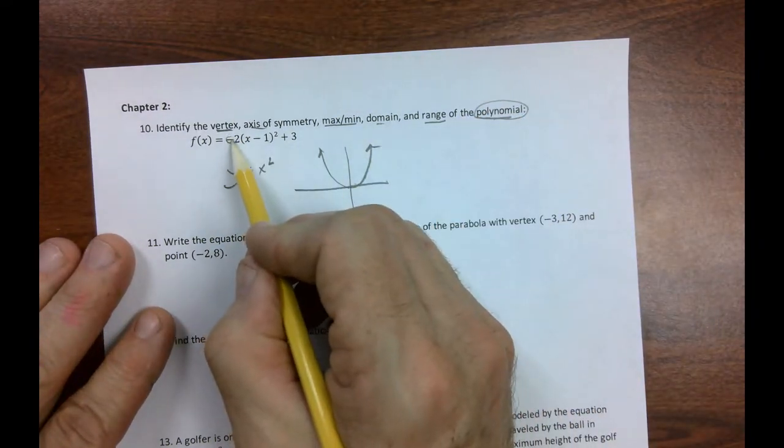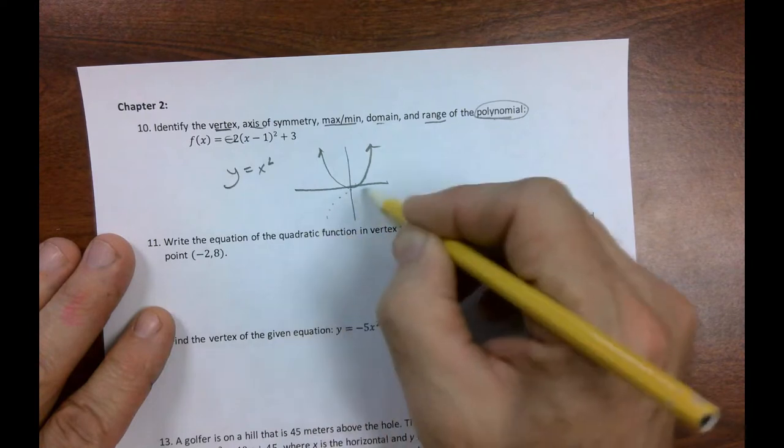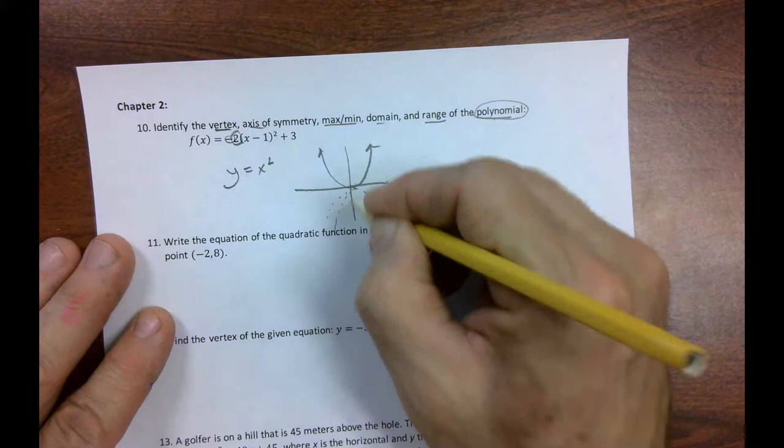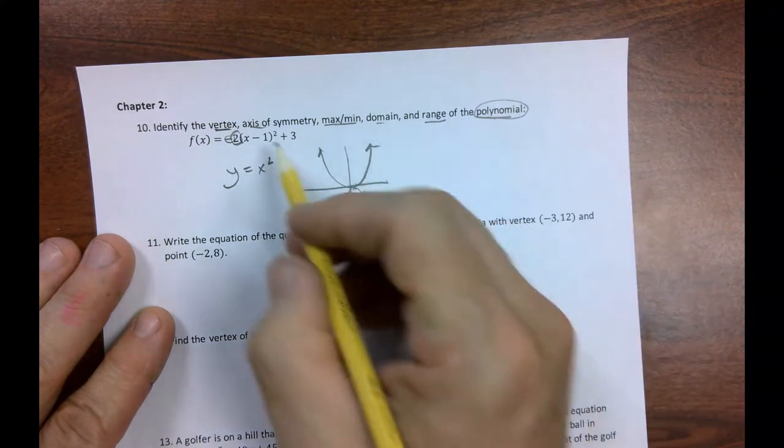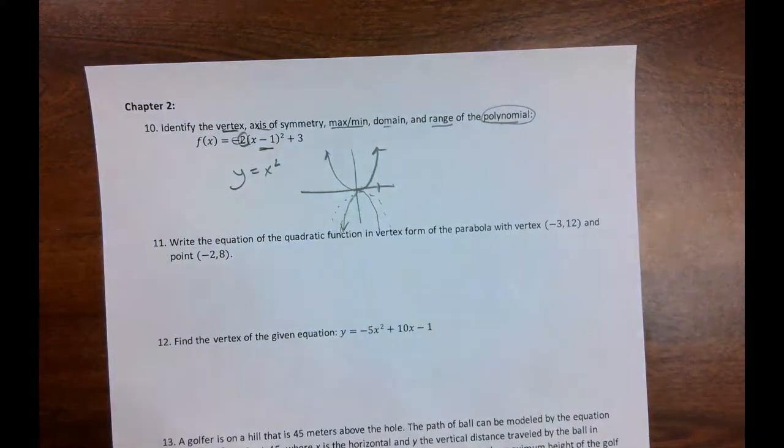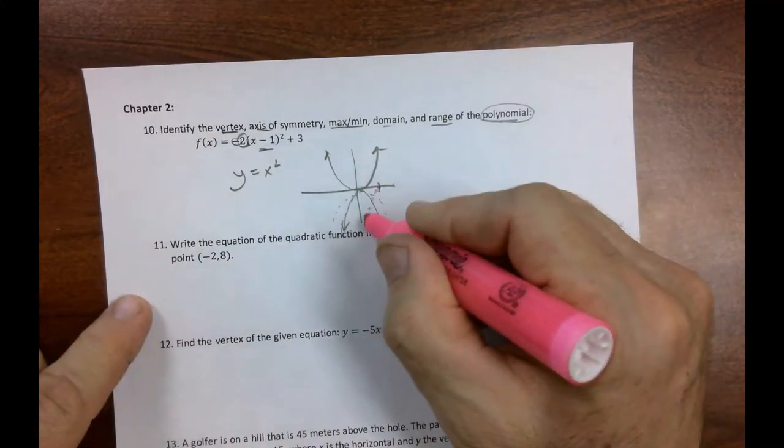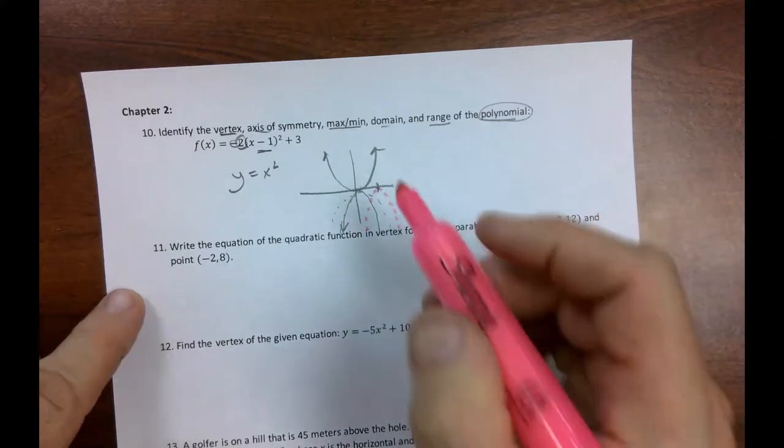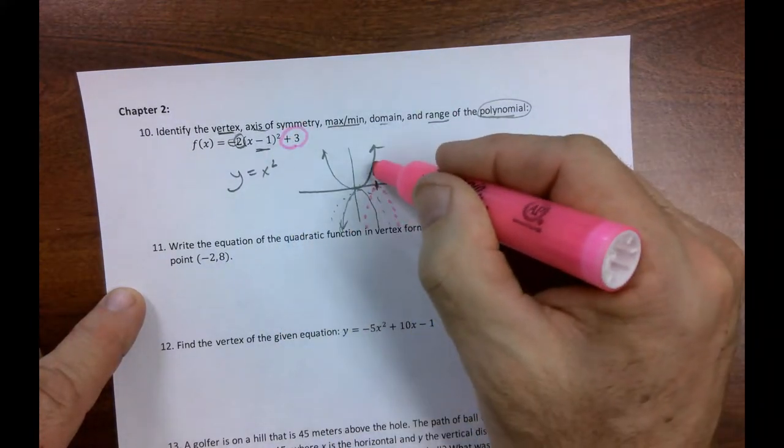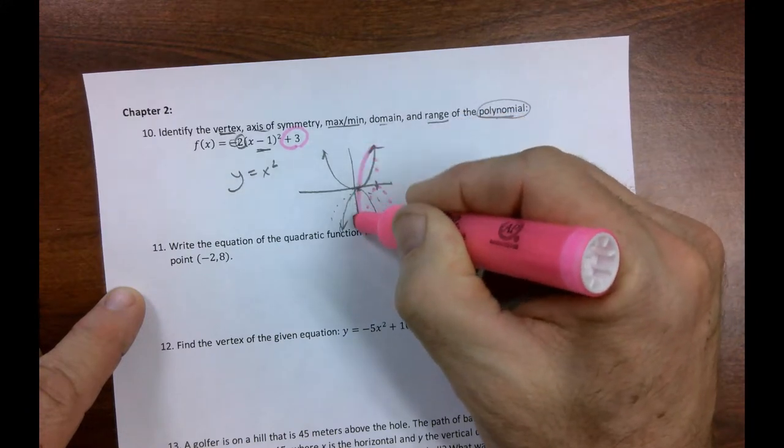Well, the first thing that does is flip it. Then this actually narrows it, vertical stretch. And then this moves it to the right one. Now I'm going to get out my pretty colors because this gets a little confusing. I'm going to make it dotted because we're not done yet. And then we're going to go up three. So that dotted pink one goes up three.